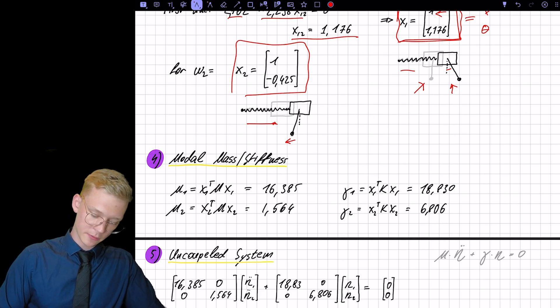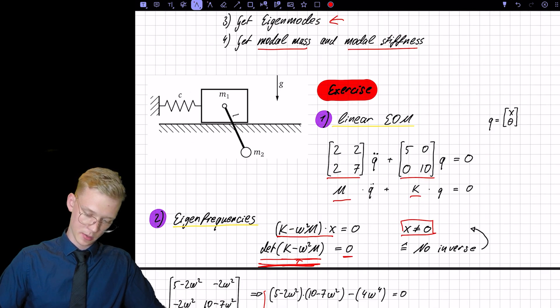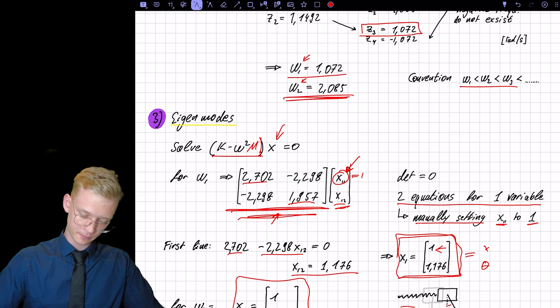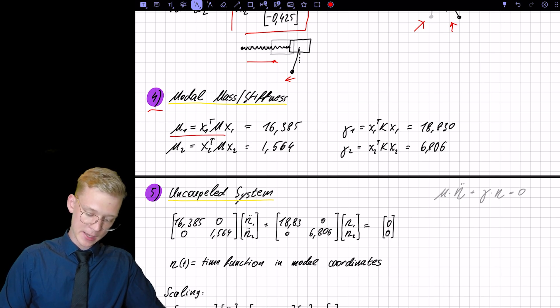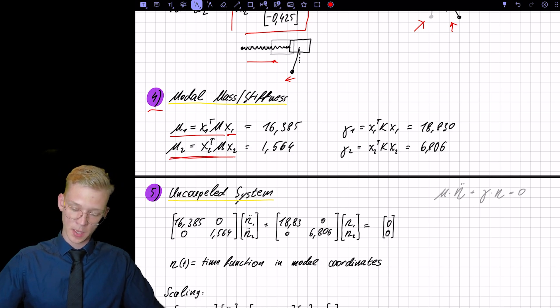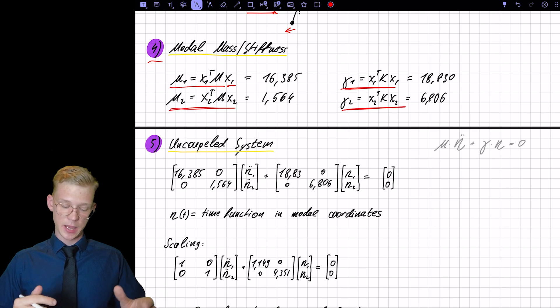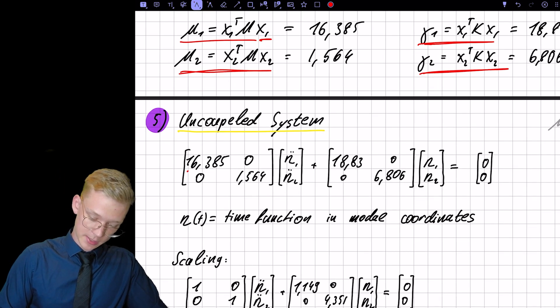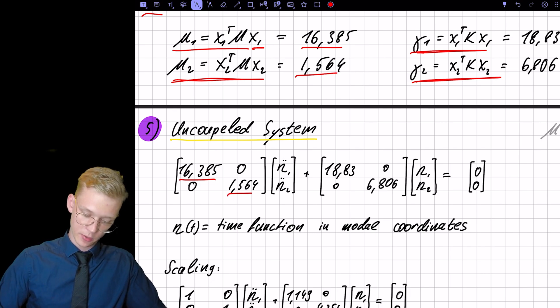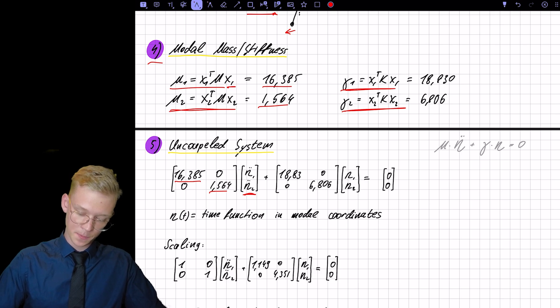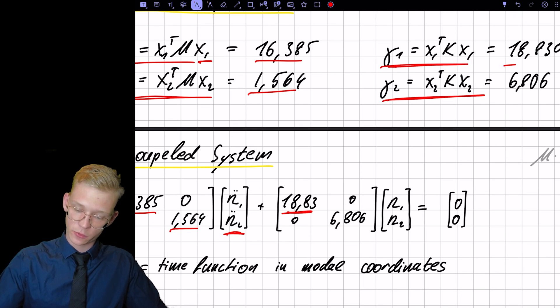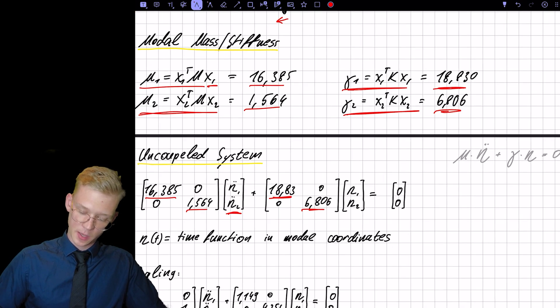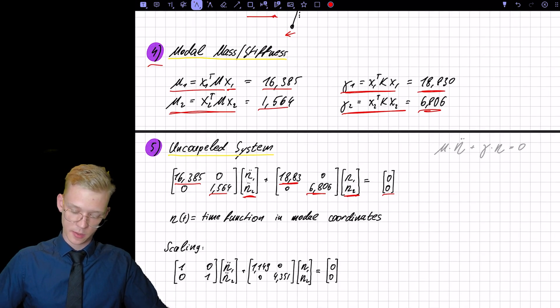So now that we have the modal mass and modal stiffness, we follow step four. We follow step four, where we get the modal mass by pre and post multiplying the eigenmode for modal mass 1 and modal mass 2. And we do the same thing for the modal stiffness. So we have gamma 1 and gamma 2. And now we can just put this in a matrix. So we have 16 from here and 1.5 from there. This is our eta double dot, so the time function. Then we have our 18 that comes from here and our 6.8 that comes from here and our, again, time functions eta. And they are set to zero.